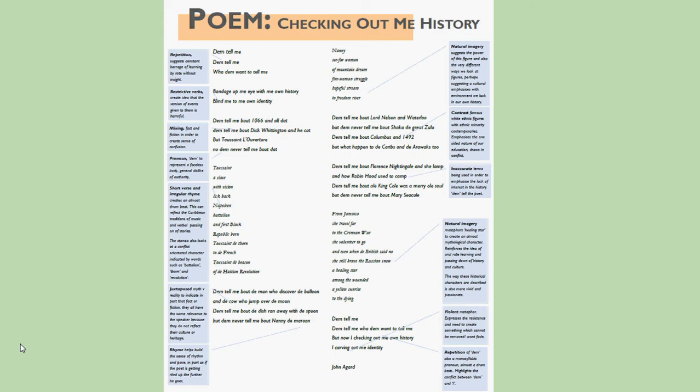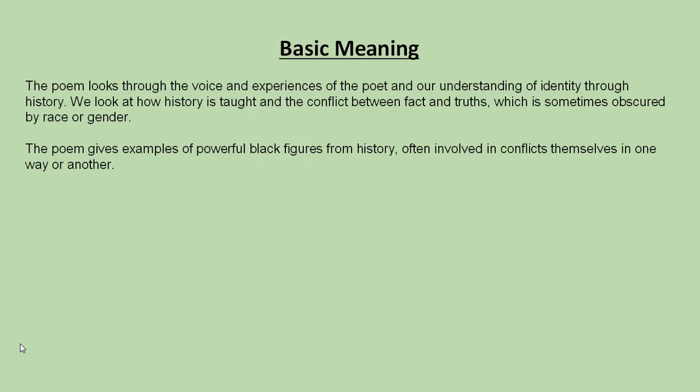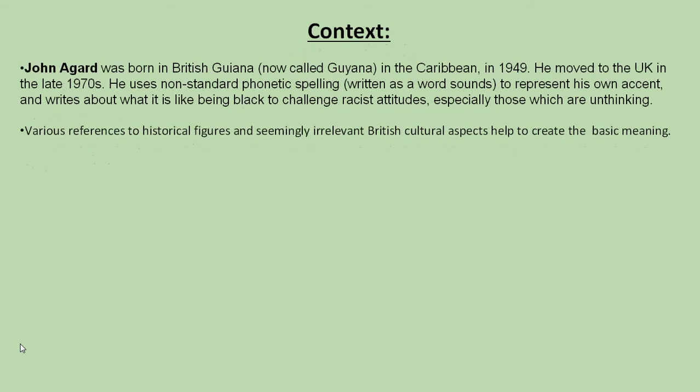Basically, the poem is told through the voice and experiences of the poet, exploring our understanding of identity through history. We look at how history is taught and how the conflict between facts and truths is sometimes skewed by race or gender. The poet gives examples of powerful black figures from history, often involved in conflicts, in order to highlight to the reader this idea of an unknown history — that your identity has been somehow masked from you.